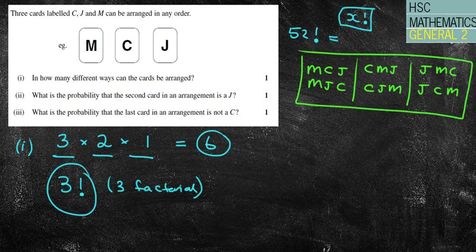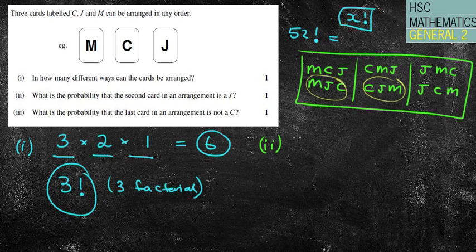Now, this can be quite useful for the second question. The second question says, What is the probability that the second card in an arrangement is a J? Well, now I've got my arrangements written up there. We've got one there, one there. Therefore, we have two in six options, which is one in three. Nice and easy there.